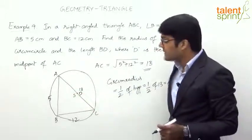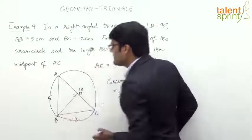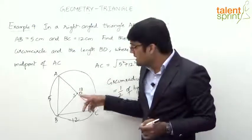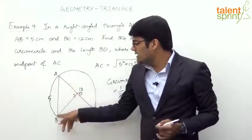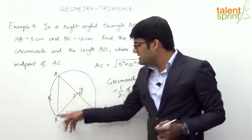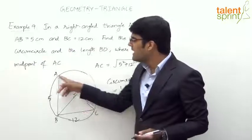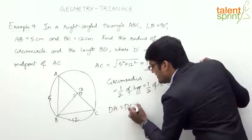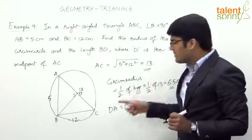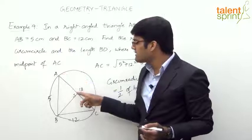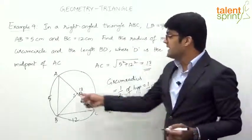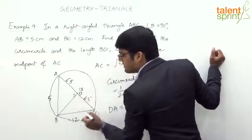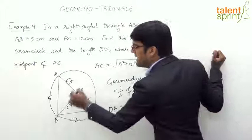Now we need to find the length BD, where D is the midpoint of AC — which is the circumcenter. Since D is the circumcenter, it is equidistant from all three vertices, so DA equals DC equals DB. We already know DA and DC are both half the hypotenuse, which is 6.5 centimeters. Therefore BD is also 6.5 centimeters, since all three distances represent the circumradius.